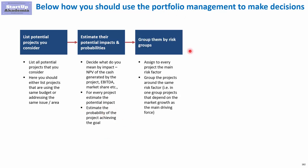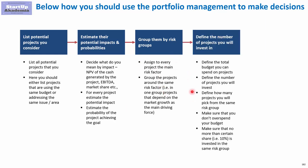Once you have this, you can start grouping projects by risk. For every project listed in step one, assign the main risk that may cause the project not to achieve its goal. Once you have assigned a risk to every project, you can group them by type of risk. The most important part of this approach is step four.